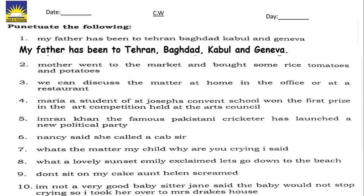Here are some more sentences for you. You have to copy these sentences into your notebook and punctuate them similarly. Write sentence number 2, then punctuate it. Then write number 3, 4, and so on accordingly.